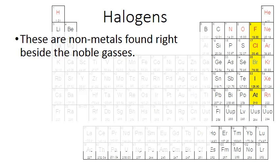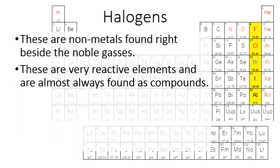And now we have the halogens. And these are the non-metals found right beside the noble gases on the periodic table. So they're over at the far right as well. And although they're very close to the noble gases in the periodic table, they're very dissimilar in their reactivity. So these are very reactive elements. And they're almost always found as compounds.